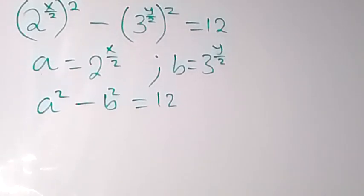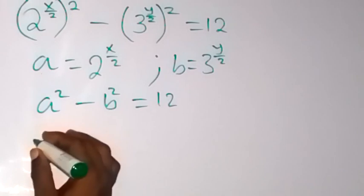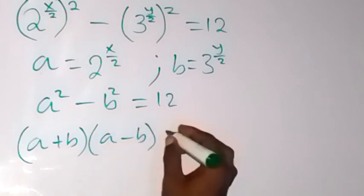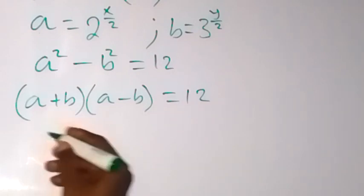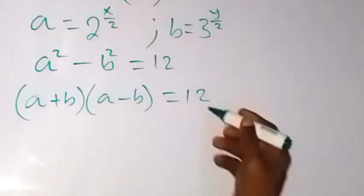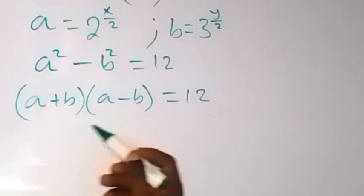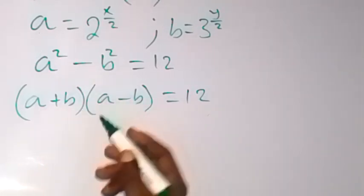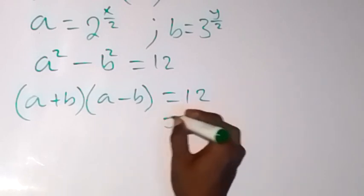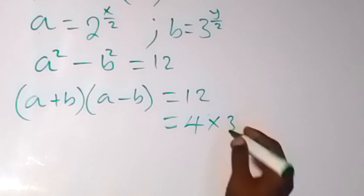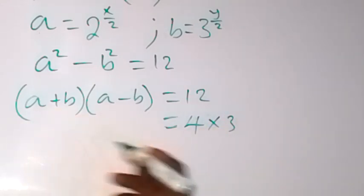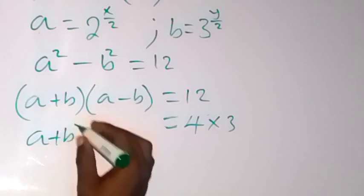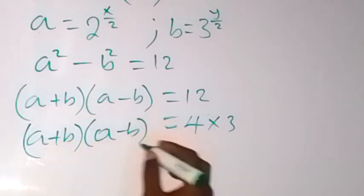We have a difference of two squares identity. When we have a difference of two squares, we can write it as a plus b multiplied by a minus b, and that equals 12. These two numbers multiply to give 12, so we can split 12 into two factors. Remember these two numbers are positive integers. Since a plus b must be greater than a minus b, we split 12 as 4 times 3. So a plus b equals 4 and a minus b equals 3.